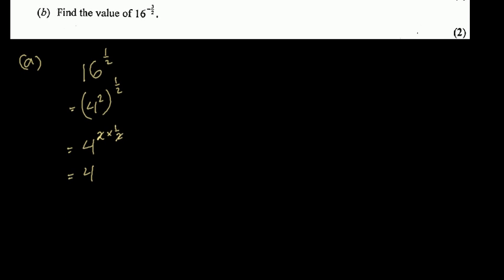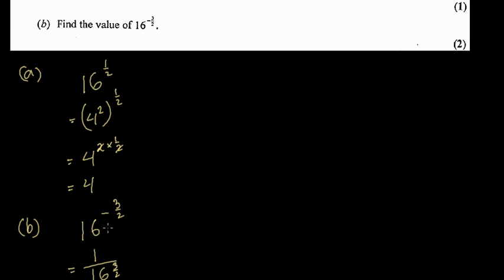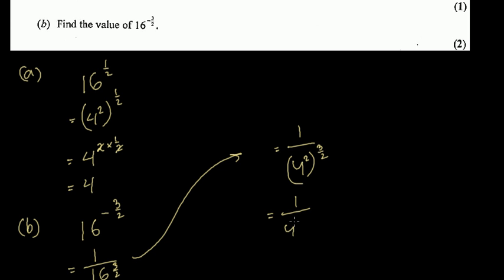The next part is 16 to the power minus 3 by 2. So 16 to the power minus 3 by 2 equals 1 by 16 to the power 3 by 2 — when the power is taken to the denominator, it becomes positive. So it would be 1 by 4 squared to the power 3 by 2. Again, when you have a power over a power, the powers multiply. The 2s cancel, and 4 cubed is 64, so the answer is 1 over 64. This first question was indices.